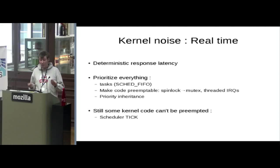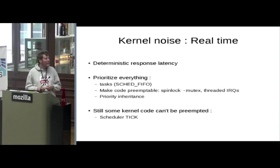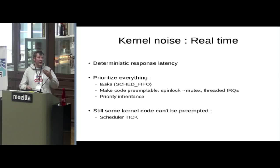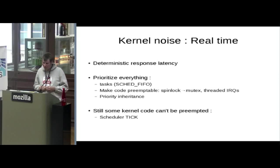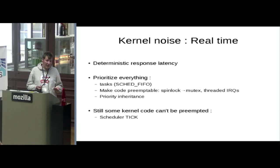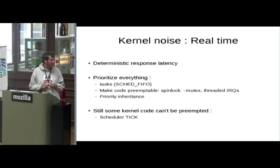IRQs, which usually cannot be preempted because they're raw pieces of code that need to execute very fast and aren't implemented as tasks, are turned into threads. The very tiny part of the interrupt that masks further interrupts is kept raw, and the rest executes in a separate task. Priority inheritance is also used — when your real-time task is waiting because another task holds locks, that other task sleeps and gives the CPU to the real-time task.